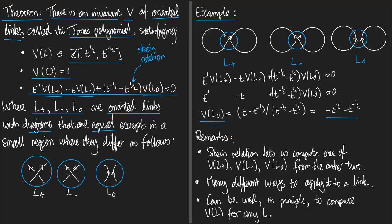Now let me just make a couple of remarks before we finish. The first remark is that the skein relation lets you compute any one of V(L+), V(L-), V(L0) from the other two. So, if you're challenged with trying to work out the Jones polynomial of some link, then you should try and find a way to think of your link as either L plus, L minus, or L zero. And you should try and do that in such a way that the other two are simpler. Simpler in the sense that you know what their Jones polynomials are already. So, there are many different ways to apply the skein relation to a given link. And you have to choose a good one if you're trying to work it out.